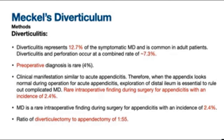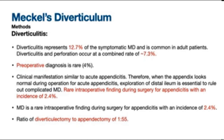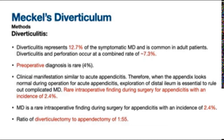Diverticulitis of Meckel's diverticulum represents 12.7% of symptomatic cases and is common in adults. Diverticulitis with perforation occurs at a combined rate of up to 7.3%. Preoperative diagnosis is rare, as its manifestation is similar to acute appendicitis. Therefore, during appendectomy, if the appendix is found to be normal, exploration of the terminal ileum is essential to rule out complicated Meckel's diverticulum.